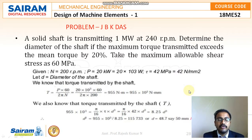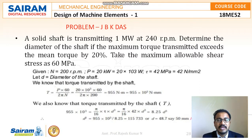This problem is taken from the author J.B.K. Dasar. A solid shaft is transmitting 1 megawatt at 240 rpm. Determine the diameter of the shaft if the maximum torque transmitted exceeds the mean torque by 20%. Take the maximum allowable shear stress as 60 mega Pascal.